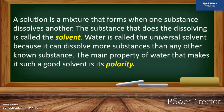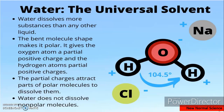A solution is a mixture that forms when one substance dissolves another. The substance that does the dissolving is called the solvent. Water is called the universal solvent because it can dissolve more substances than any other known substance. The main property that makes water such a good solvent is its polarity — the bent molecule shape gives oxygen a partial negative charge and hydrogen a partial positive charge, attracting parts of polar molecules to dissolve them. Water does not dissolve non-polar molecules; it only dissolves polar molecules.